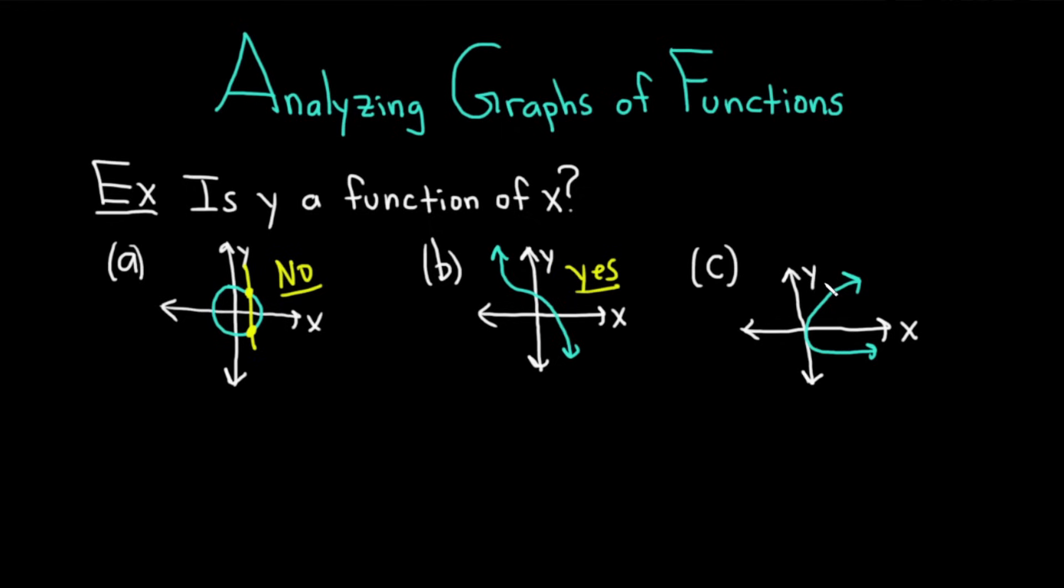And in part c, can we find a vertical line that crosses more than once? Boom! Absolutely. It crosses twice. So in this case, the answer is no. This is not a function of x. If you can find just one vertical line that crosses more than once, then it is not going to be a function of x. And if no matter how many vertical lines you draw, they all cross exactly once, then the answer is yes, it is a function of x.